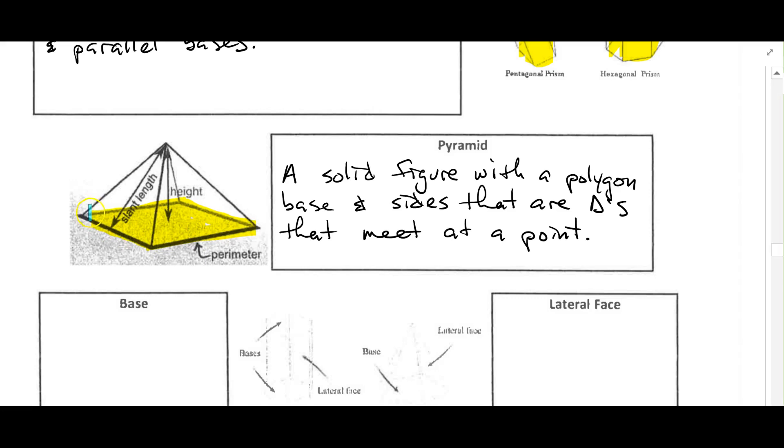Each of the sides is a triangle. I have a triangle here, another triangle here, one more in the back, and then one more on the left in the back. I have these four blue triangles that all meet up at that point at the top, which is called the vertex of the pyramid.